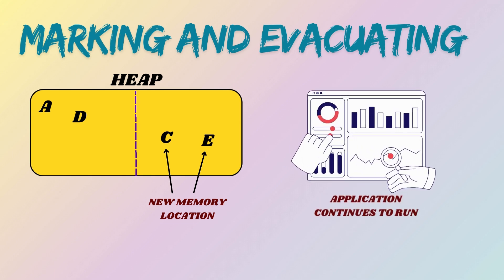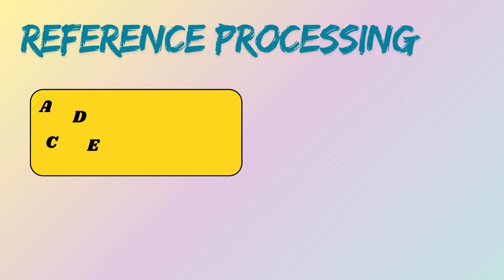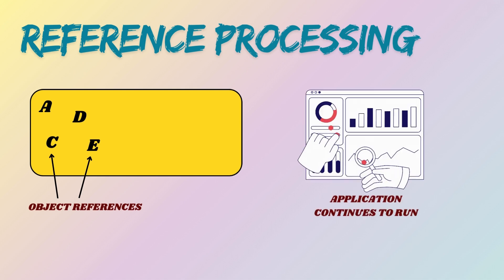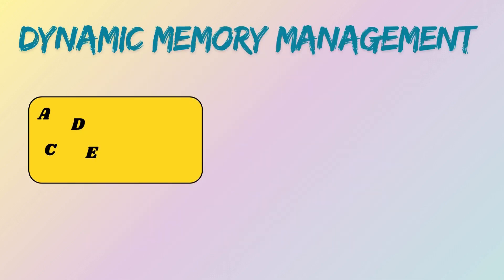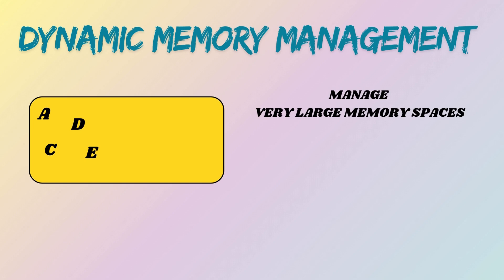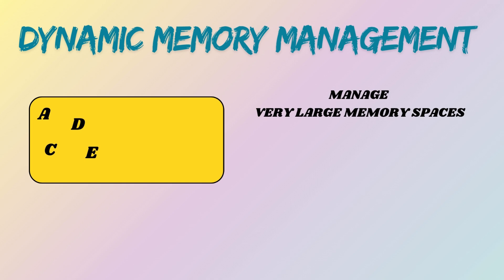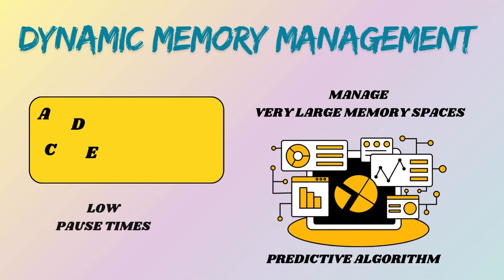ZGC performs most of its work concurrently while the application continues running, minimizing GC pause times. ZGC handles reference objects like weak or soft references without significant pauses. We have covered various object references and how GC collects them in a separate video — the link can be found in the description box. ZGC adjusts heap sizes dynamically to efficiently manage very large memory spaces. It uses predictive algorithms to keep pause times low and predictable, ensuring smooth application performance.